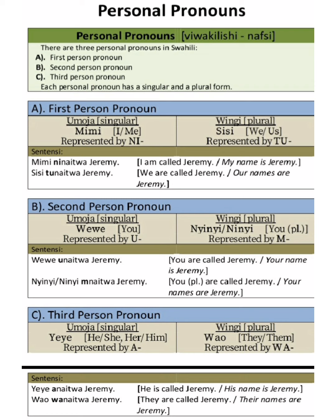When we transform the second person into plural, 'wewe' becomes 'ninyi' or 'nyinyi,' meaning 'you all.' It is represented by the letter 'm.' For example: 'Ninyi mnaitwa Jeremi' — you are all called Jeremi, your names are Jeremi. Notice how we use 'ninyi' and the letter 'm' in this sentence.